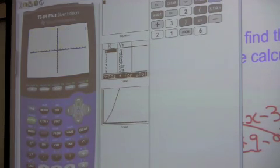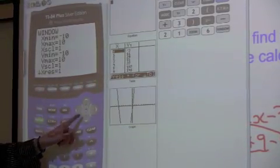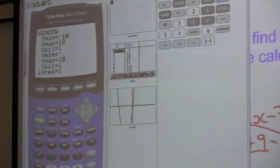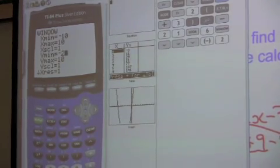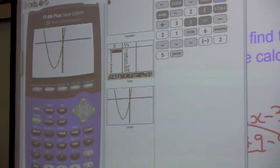Zoom standard. You can see that the vertex is not shown. So we change our window. Y min to maybe negative, as long as it's more than negative 21. So negative 25. Hit graph. And you can see the vertex.